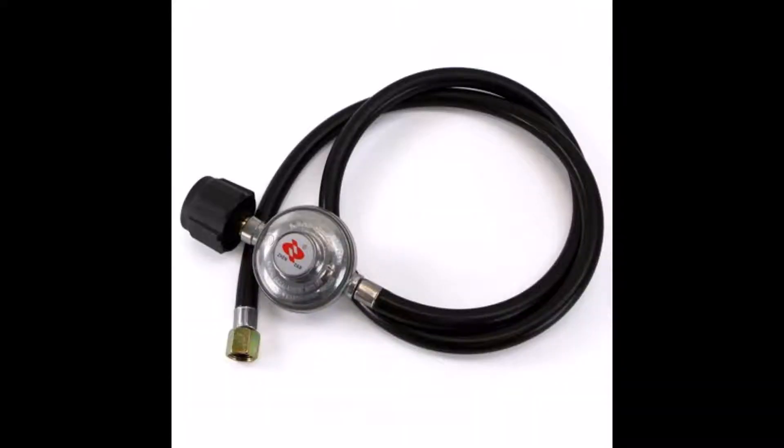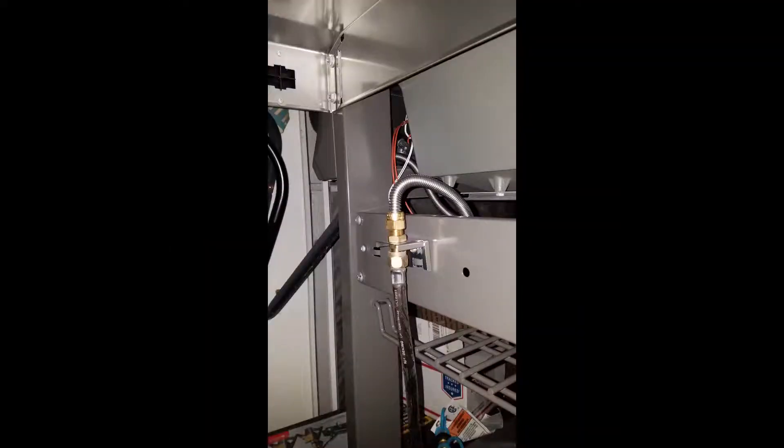In order to do a conversion from natural to propane, we need three things. We need a propane regulator and hose to hook to the fuel tank, which you see here. The black end hooks to the propane tank, and then the other end hooks to the gas grill where the natural gas once connected.